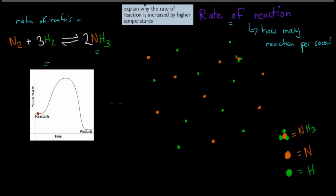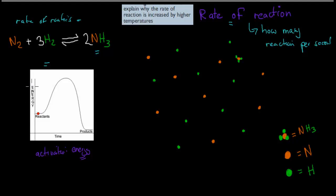What's important to know is this graph, which shows something called activation energy. This activation energy needs to be overcome for the reaction to occur. We've got energy on one side and time on the other. For this reaction to happen, we need to basically go over that hill in terms of energy for the product to be formed.